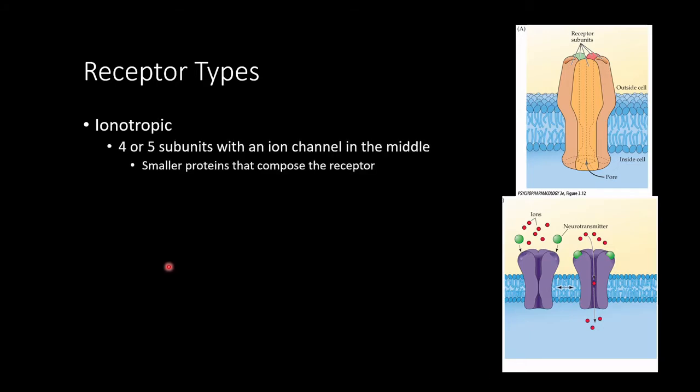First off, we have ionotropic. Ionotropic receptors are comprised of four or five subunits with an ion channel in the middle. So here we see the receptor subunits, these bits that are making up the actual shape of the receptor. And you can see in the middle a pore is formed. The ion channel, when the shape of this changes, can be opened to allow ions to flow through. These subunits are just smaller proteins that are seeded together that comprise the receptor.